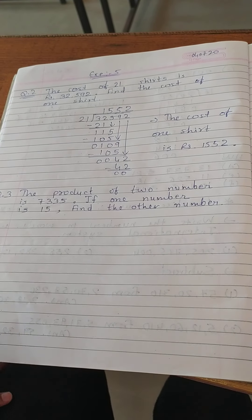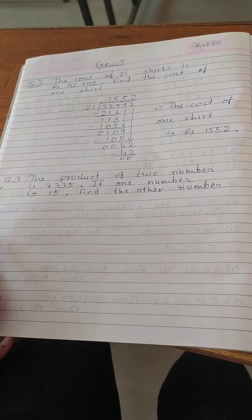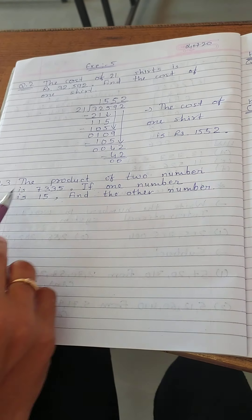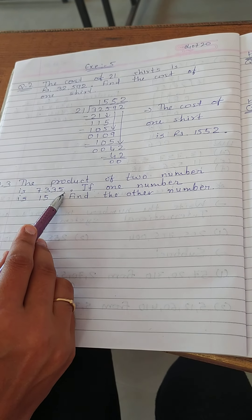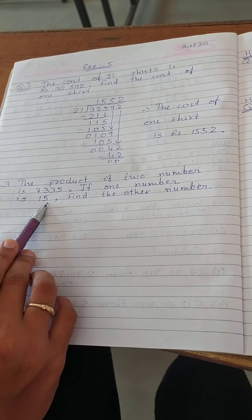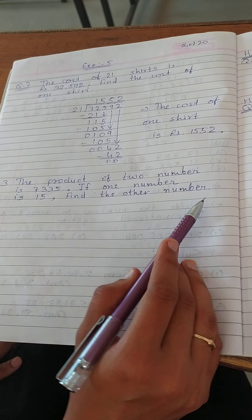Done? Now let's do question number 3. The product of 2 numbers is 7335. If 1 number is 15, then find the other number. Here, product.